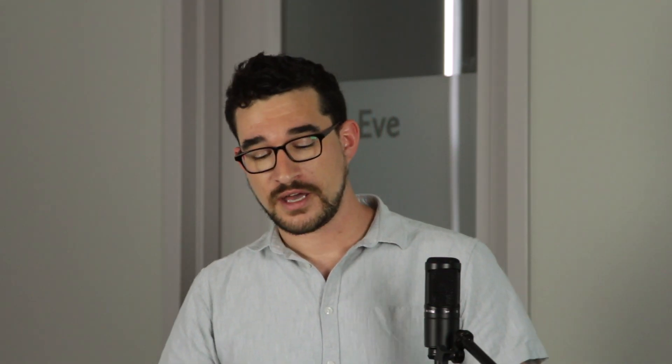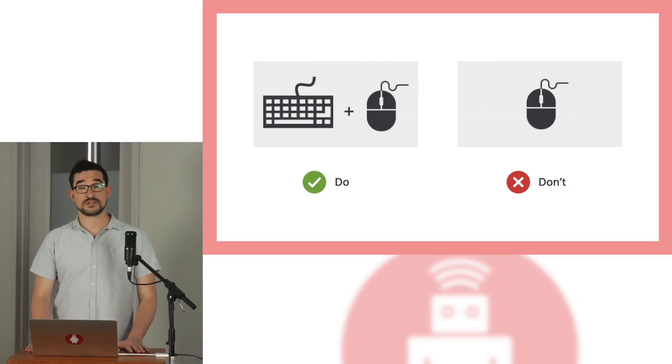The second principle is operable. It covers making sure that the input a person is using to interact with technology is honored. Even though mice and trackpads are very commonplace, there are people who do not possess the physical dexterity required to use them. To make something operable, it needs to be capable of being interacted with using other forms of input, such as a keyboard or other specialized assistive technology devices, guaranteeing that anyone, regardless of their current device or ability, can navigate and take action on your content.